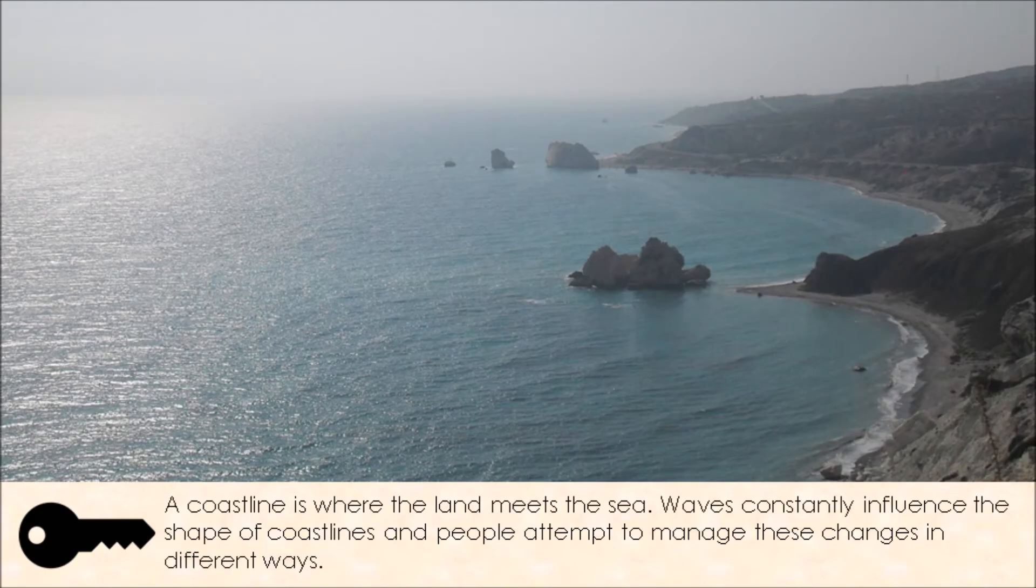When I use the word coastline, I'm referring to where the land meets the sea. Within our coastline environments and coastal locations, waves constantly influence the shape of our coastlines. We as people attempt to manage the changes that waves create. They cause erosion, transportation, and deposition, and we can manage coastlines in different ways, but we're not quite onto that yet. Today we're just going to be thinking about how those waves influence our coastline.